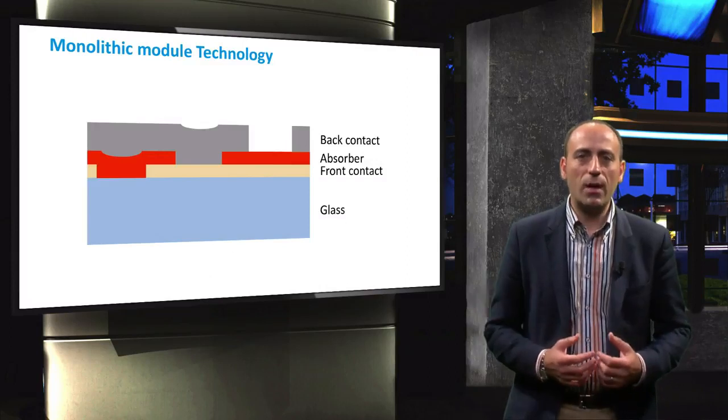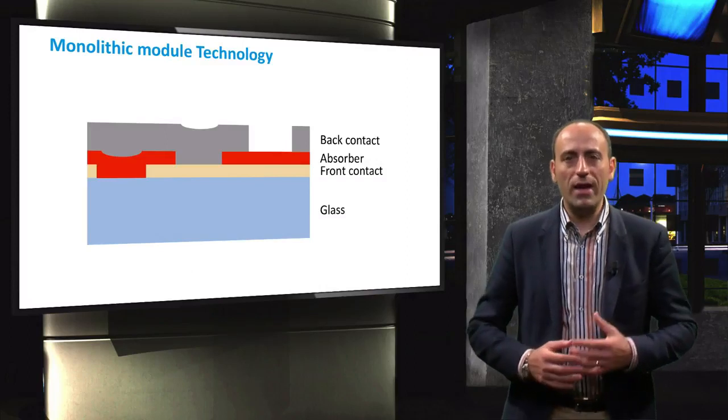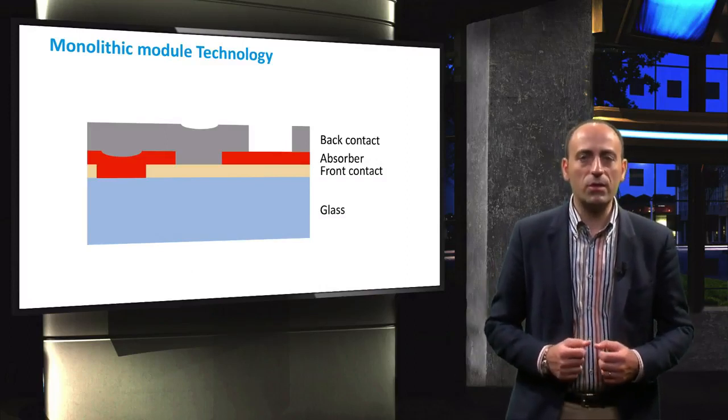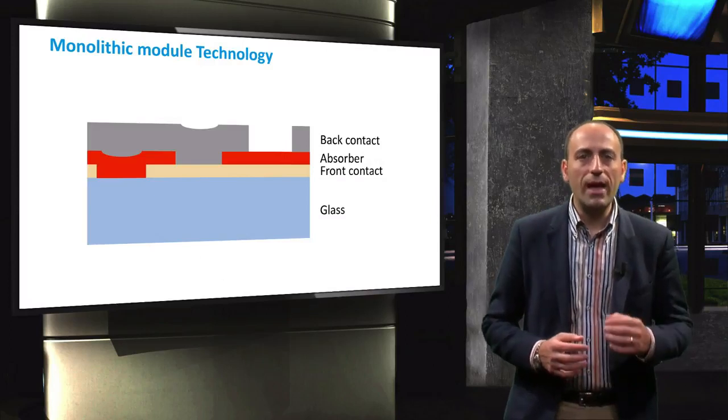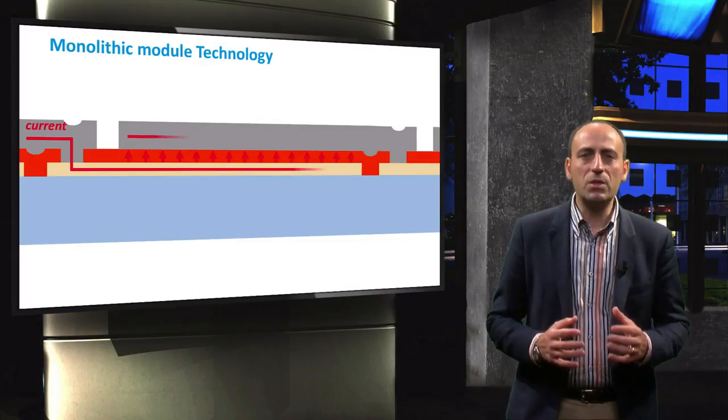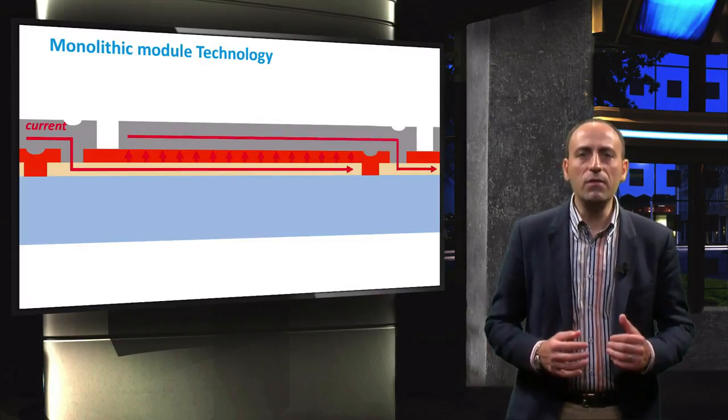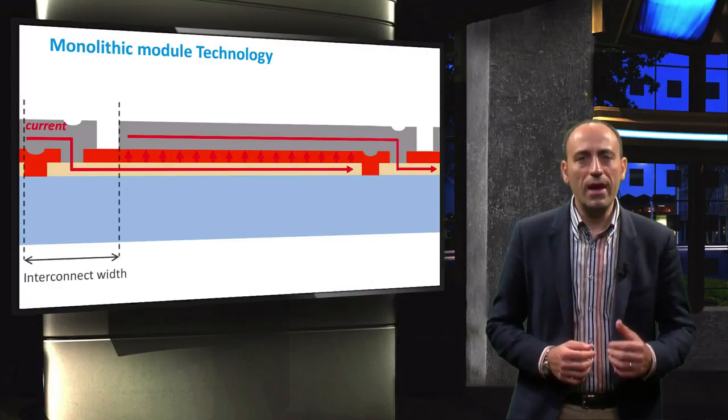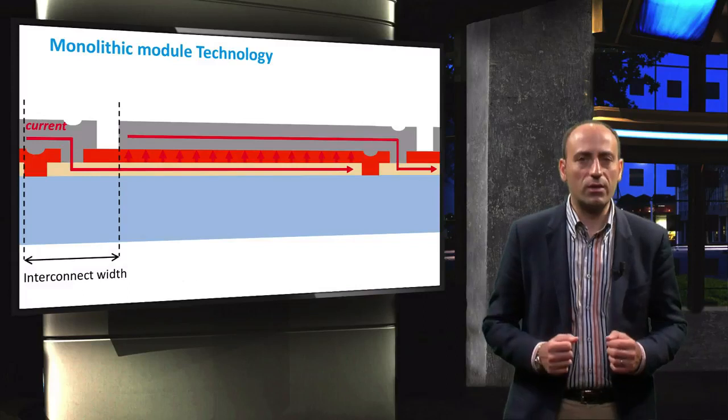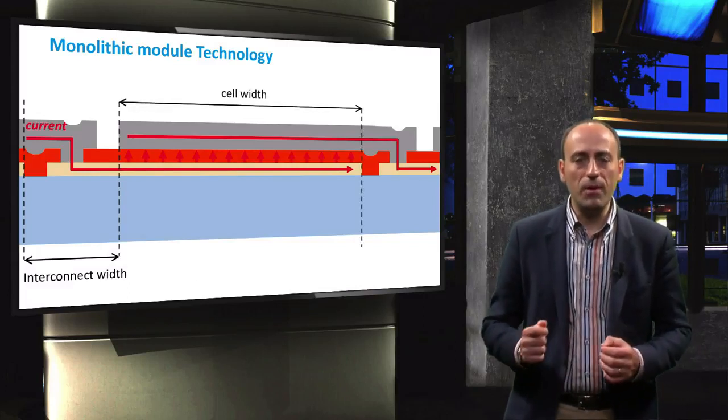Generally, the laser scribes run along the full length of the substrate module. We, therefore, end up with a module that consists of many very narrow cells of about 1 cm width and a length equal to the module length. If we zoom out, we can see how the current flows through the P2 scribe and connects the individual cells in series. The area in which the laser scribes take place is called the interconnect width. The cell width is, therefore, defined by the P3 and P1 scribes.